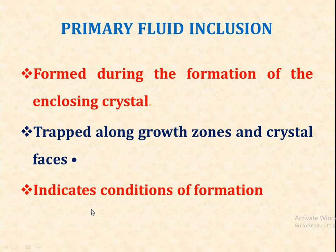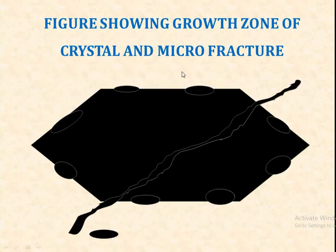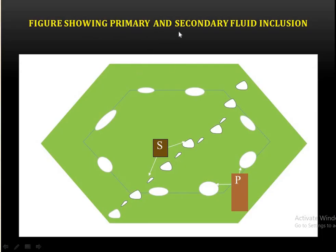Secondary fluid inclusions are trapped in fractures due to the healing of fractures, and occur as trails and clusters. These trails and clusters cut across grain boundaries. Figures here show the growth zones of crystals and micro-fractures. This figure shows primary and secondary fluid inclusions — the primary inclusions are along the grain boundary, while secondary inclusions occur along the fractures.